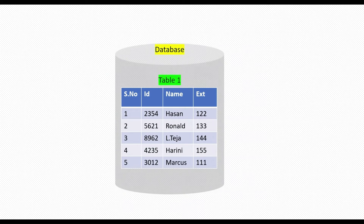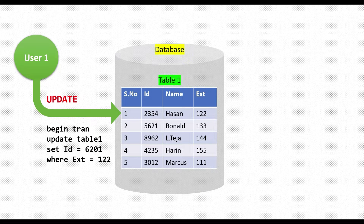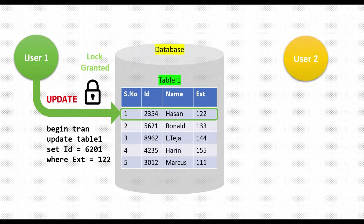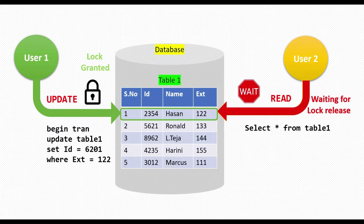Let's say I have a database with a table. A user comes and wants to update one row inside this table. SQL Server will grant him a lock to access this resource. At the same time, another user comes and wants to just read the data inside this table. SQL Server will not allow this user to read the table because it has an exclusive lock acquired by User 1. So User 2 will be asked to wait until the lock is released by User 1. We can call this situation blocking, because User 2 is being blocked by User 1.